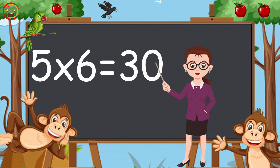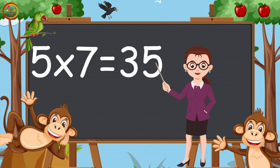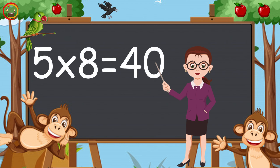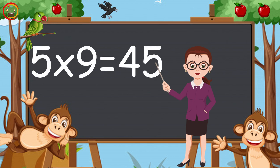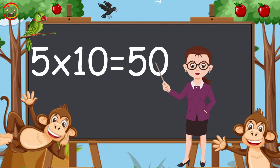5 times 6 is 30. 5 times 7 is 35. 5 times 8 is 40. 5 times 9 is 45. 5 times 10 is 50.